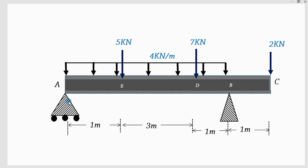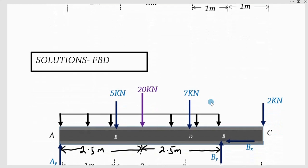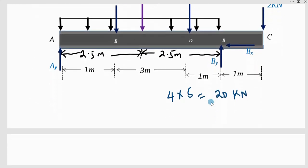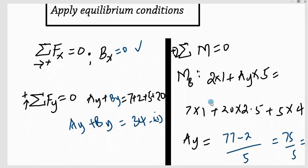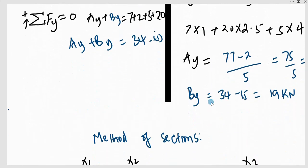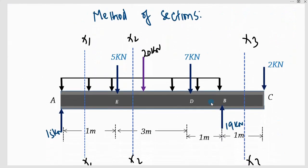So we have a beam which has a roller support at A and a pin support at B. We have a uniformly distributed load of 4 kN per meter, then point loads of 5 kN, 7 kN, and 2 kN at C. I have already solved this problem and we have the solutions. We apply equilibrium conditions to get the reactions at the supports.